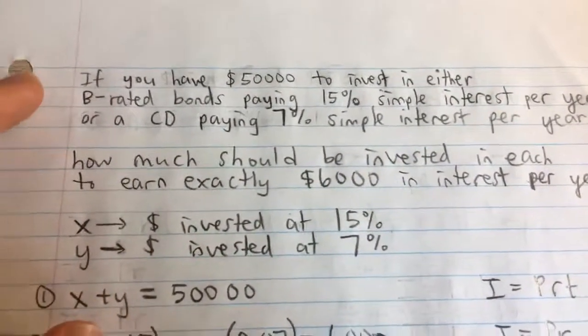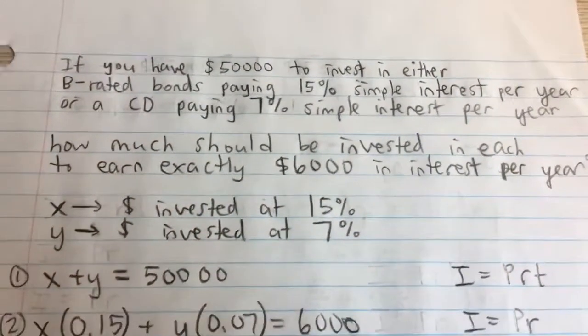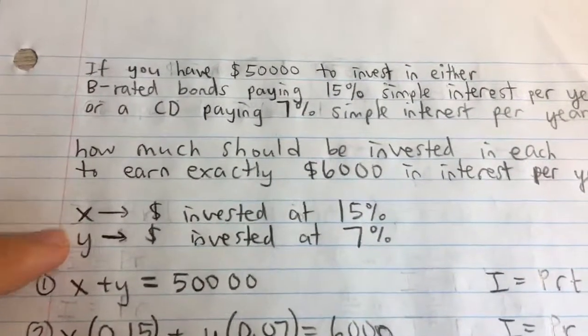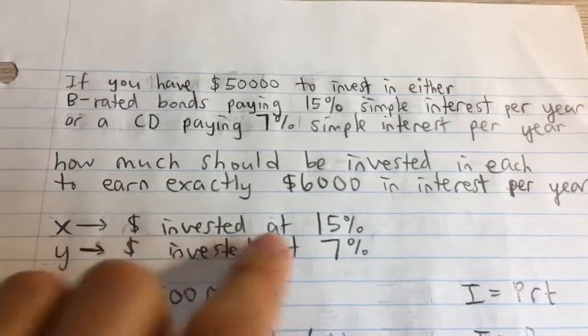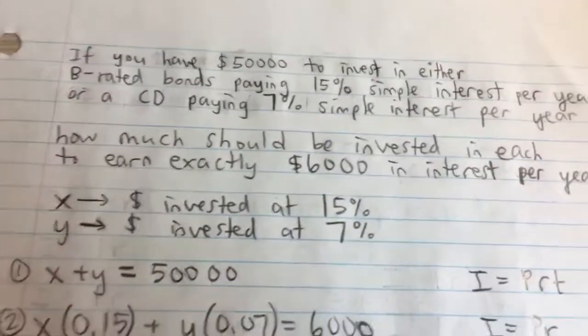We're going to allocate some in one and some in the other to get exactly $6,000 in interest per year. First, I'll set some variables: X is the money invested at 15% and Y is the money invested at 7%, since we're trying to find both values.